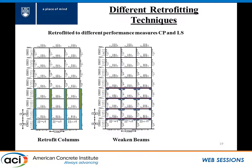The second retrofitting option was weakening the beams. To do that, we cut off the bottom rebars from both ends of the beams. We had to do the first four stories to reach collapse prevention level. When we tried to go further, we could never reach the life safety level — so for beam weakening, we could only reach the collapse prevention level.